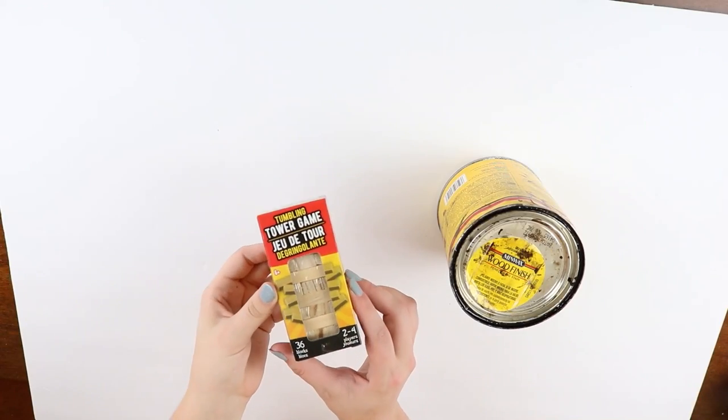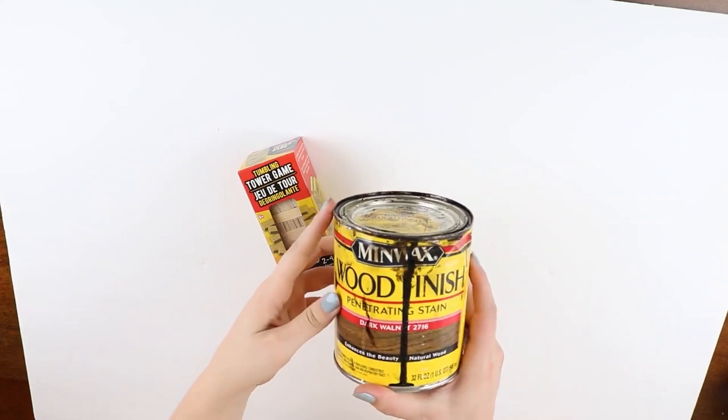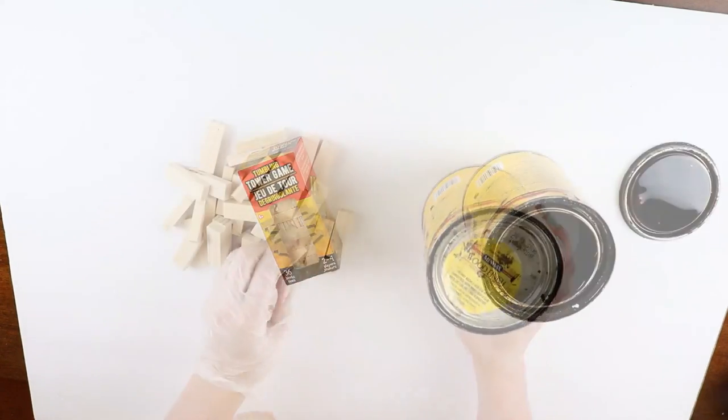For the first fire pit, we're going to need to stain three tumbling tower games. The stain that we'll be using is by Minwax in Dark Walnut.